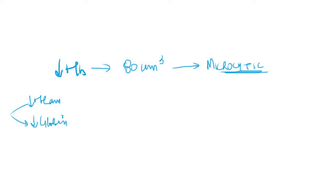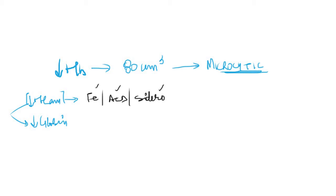In my previous videos I told you about the various reasons why the production of heme may be decreased — it may be due to iron deficiency, anemia of chronic disease, or sideroblastic anemias. I have covered all these in my previous videos, so if you want to learn about these things you can just watch those.